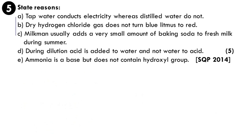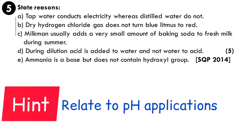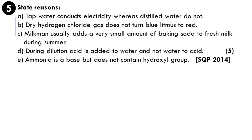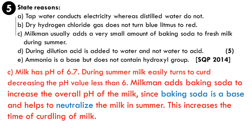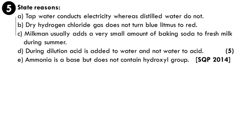Sub-question C: a milkman adds a small amount of baking soda to fresh milk during summer. Milk contains lactic acid and is slightly acidic, with a pH of about 6.7. During summer, milk easily turns to curd. Adding baking soda (a base) creates a neutralization reaction, increasing the overall pH of the milk. This increases the curdling time, preventing milk from turning into curd quickly.